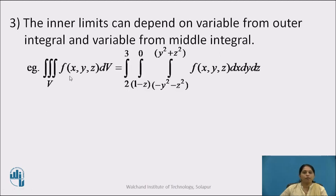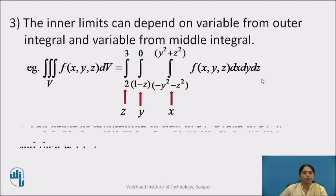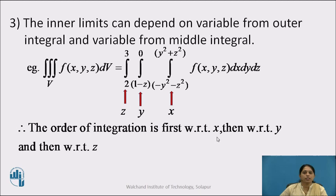For example, triple integral over V of f(x, y, z) dV equals integration from 2 to 3, integration from 1 minus z to 0, integration from minus y² minus z² to y² plus z² of f(x, y, z) dx dy dz. Here, the limits of the inner integral are in terms of y and z, so these are the limits of x and the first integration is with respect to x. The middle integral is expressed in terms of z, so this is the limit of y, and the outer integral has constant limits, so these are the limits of z. Therefore, the order of integration is first with respect to x, then y, then z.